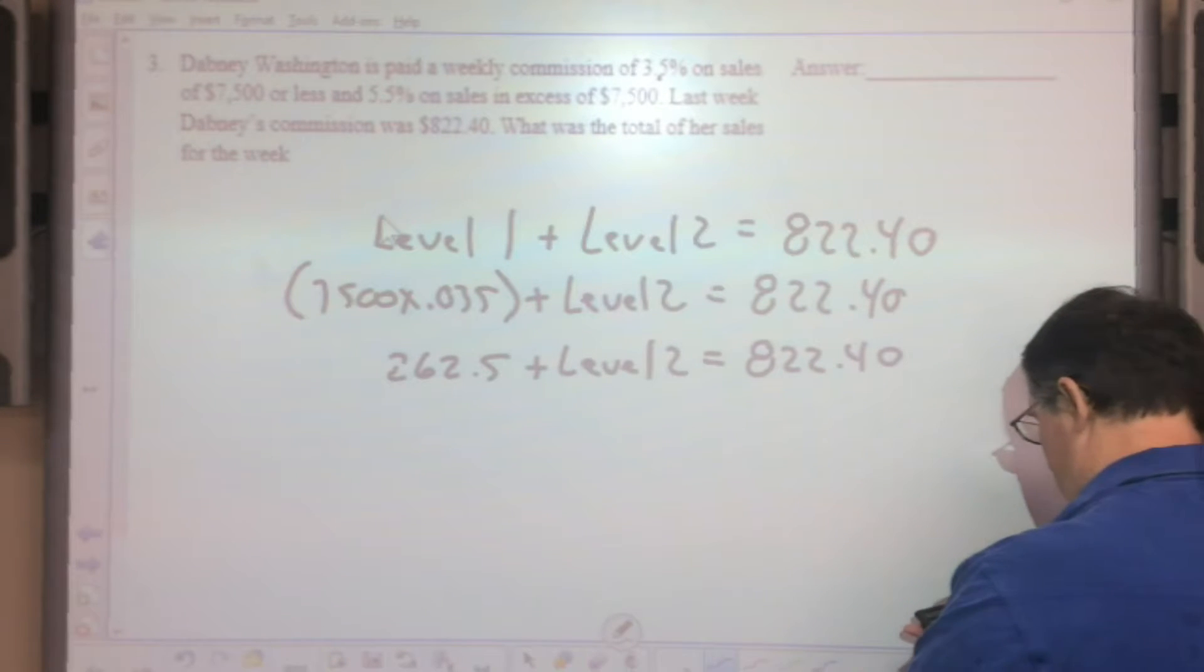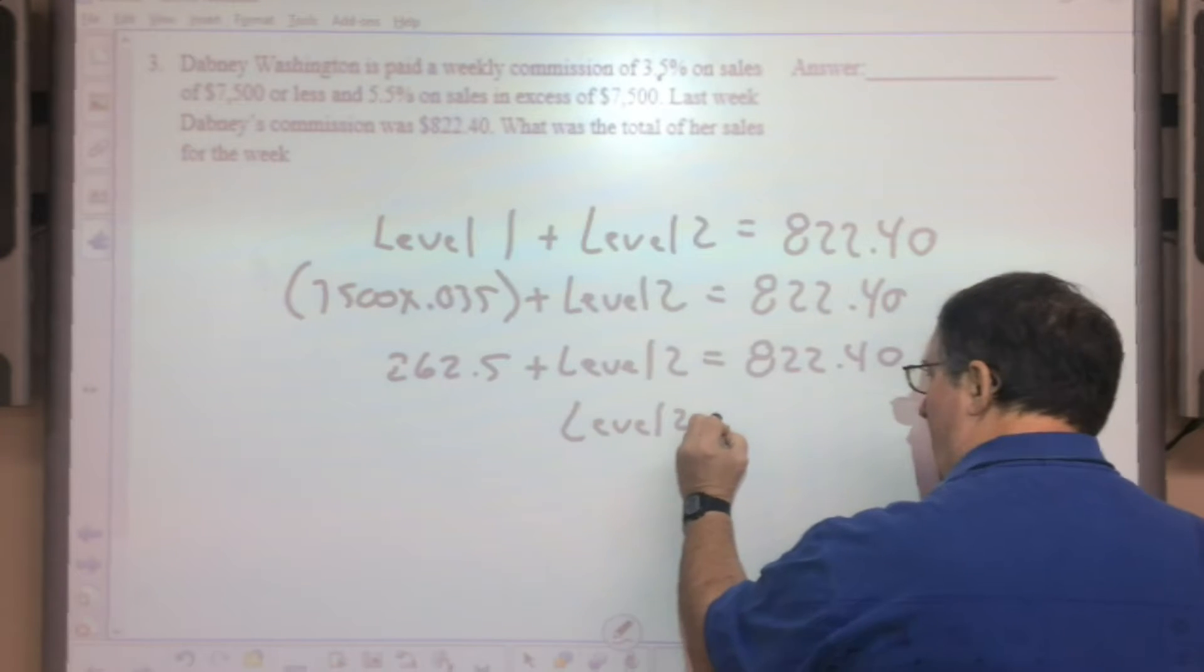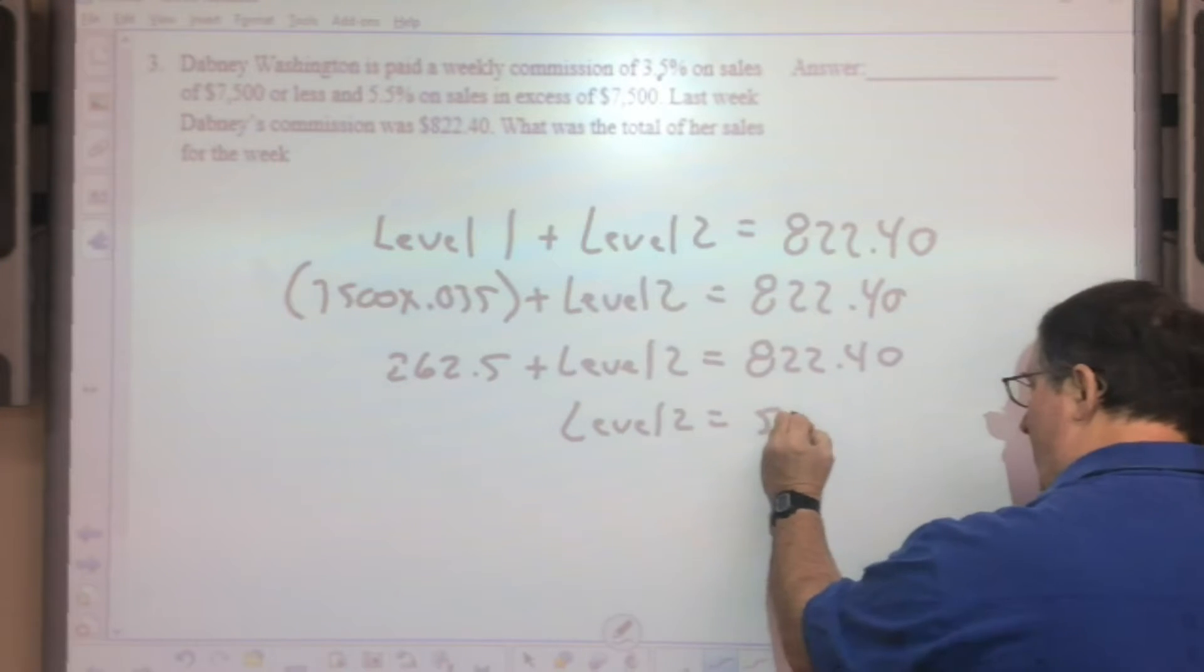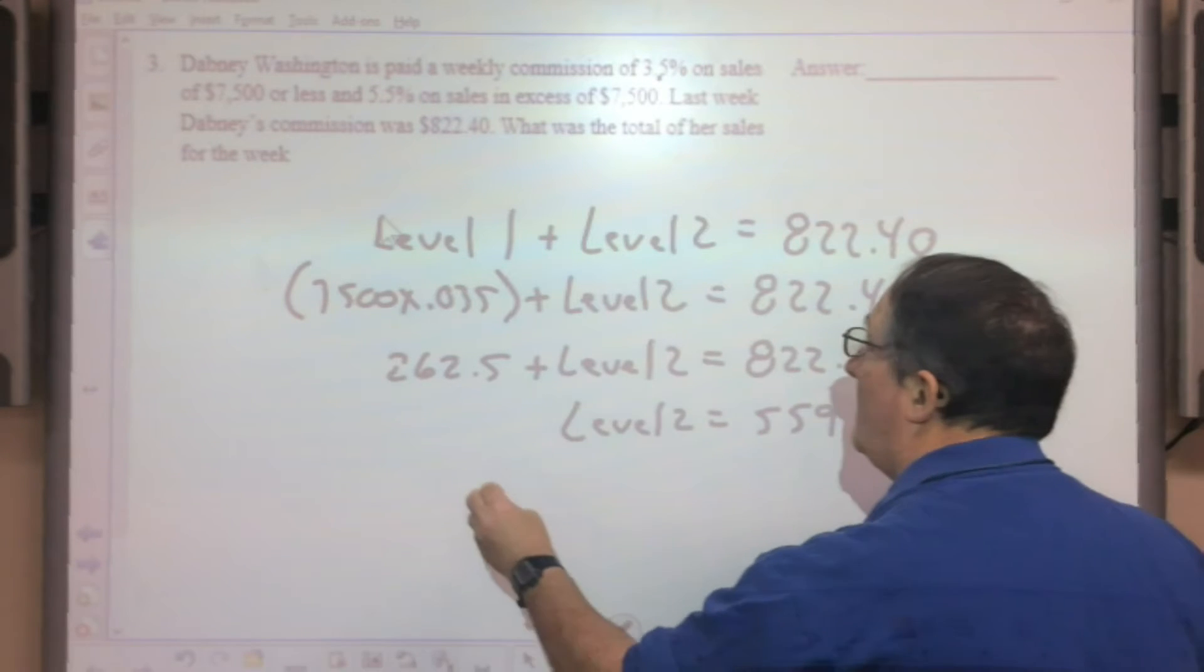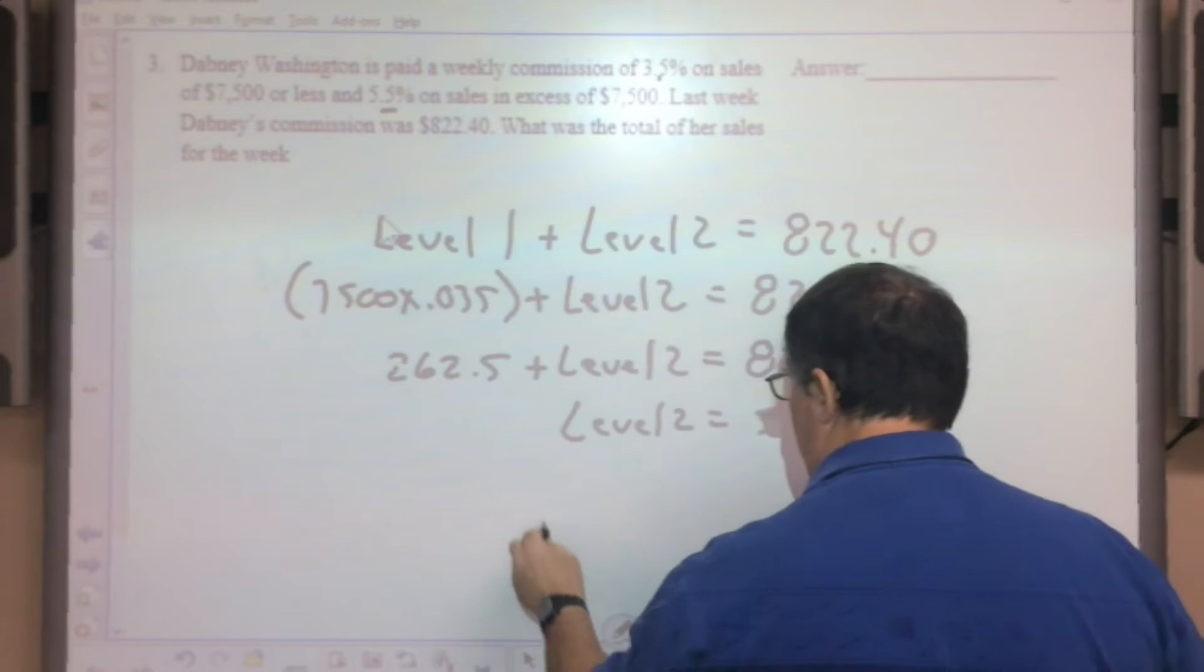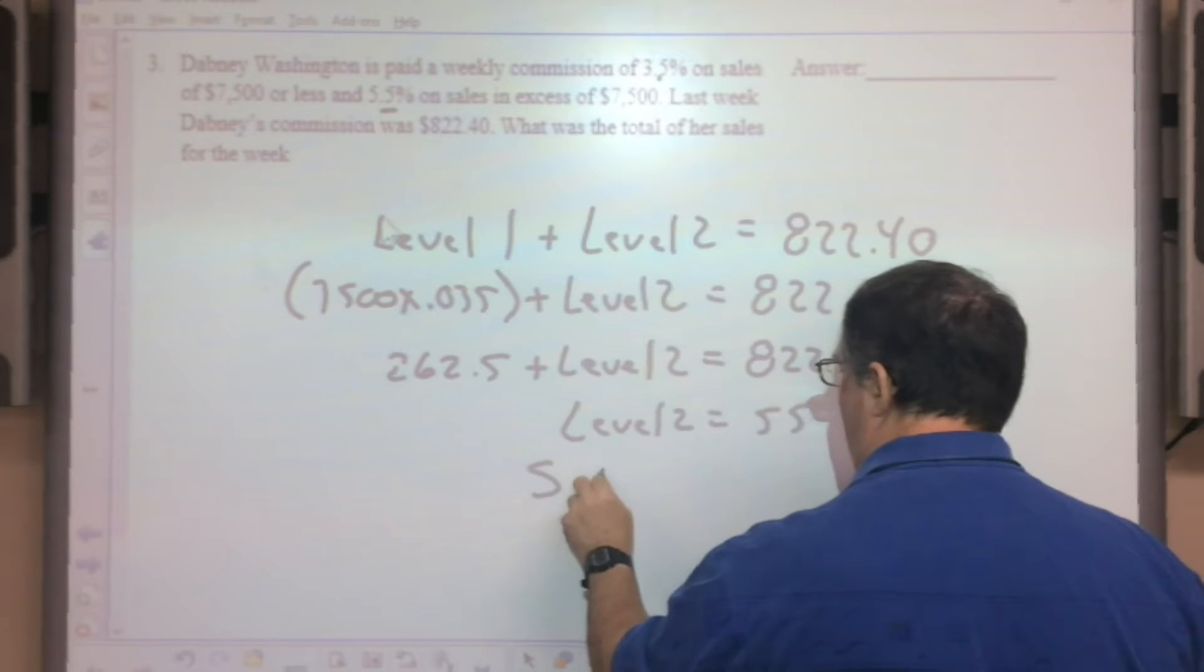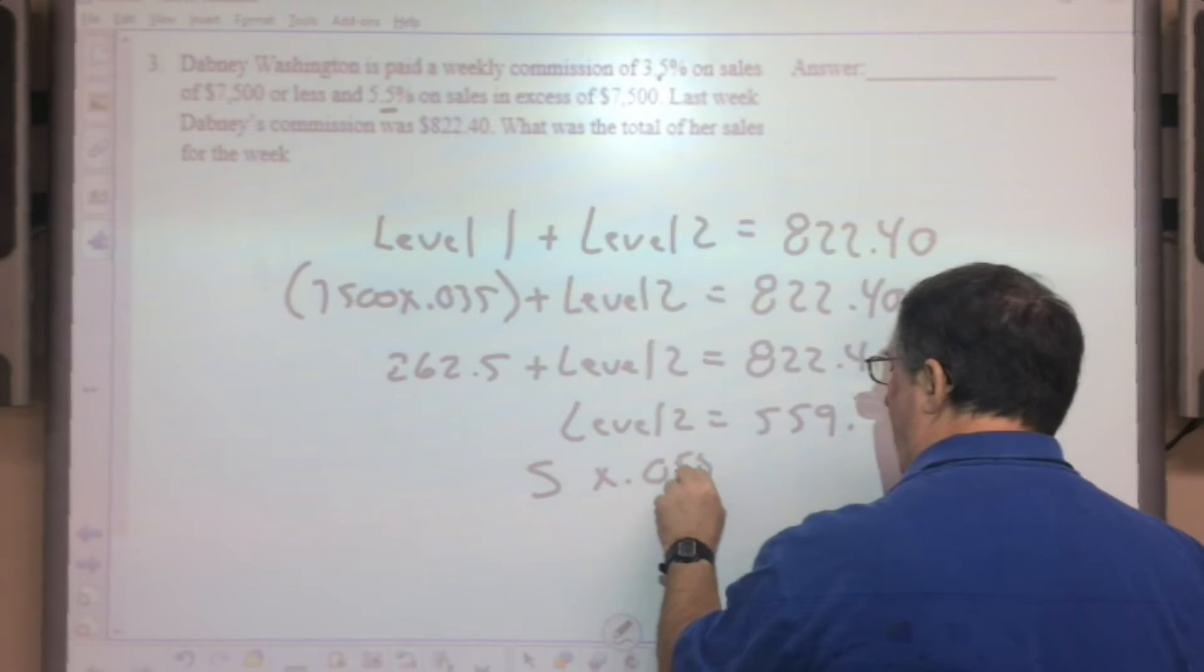That's less than the total commission for the week, so subtract $822.40 minus $262.50. Level 2, the commission you earned, will be $559.90. So now we're trying to figure out sales.